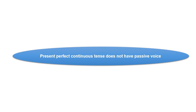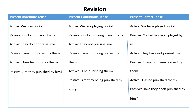تینوں present tenses کا ذرا revision کرتے ہیں۔ Present definite tense: 'We play cricket' → is/am/are کا اضافہ → 'Cricket is played by us۔' Present continuous tense: 'We are playing cricket' → 'being' کا اضافہ → 'Cricket is being played by us۔' Present perfect tense: 'We have played cricket' → 'been' کا اضافہ → 'Cricket has been played by us۔' Negative: 'They do not praise me' → 'I am not praised by them۔' 'They are not praising me' → 'I am not being praised by them۔' 'They have not praised me' → 'I have not been praised by them۔'